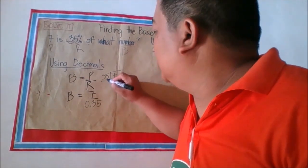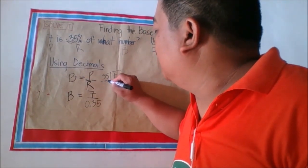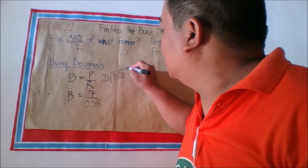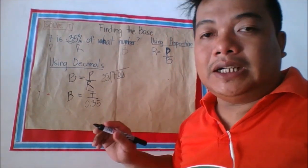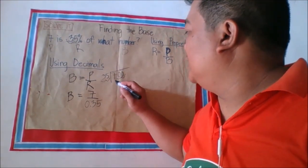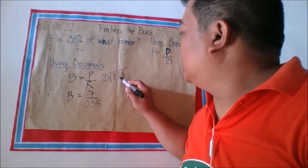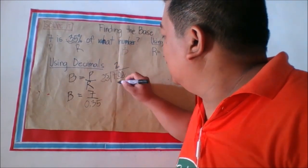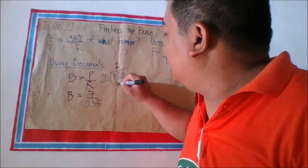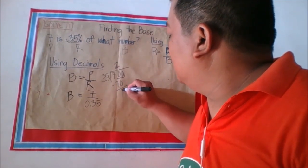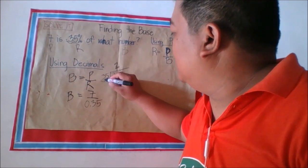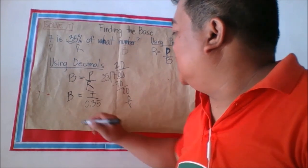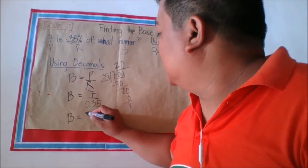Since the divisor is a decimal, move 2 decimal places to the right for both divisor and dividend, then add zeros. Now the divisor is a whole number, so we can divide. 70 divided by 35 is 2. 2 times 35 is 70. 70 minus 70 is 0. Bring down 0. 0 divided by 35 is 0. So the answer is 20. The base is 20.